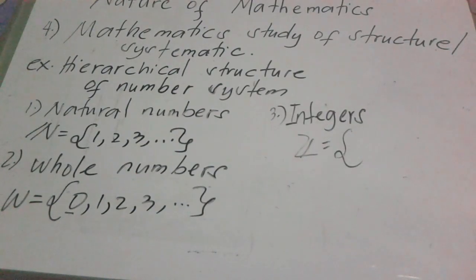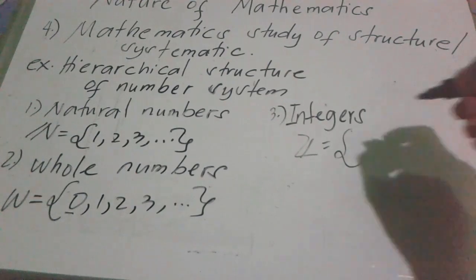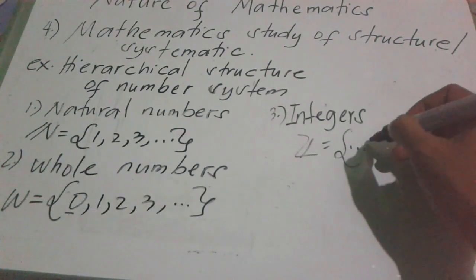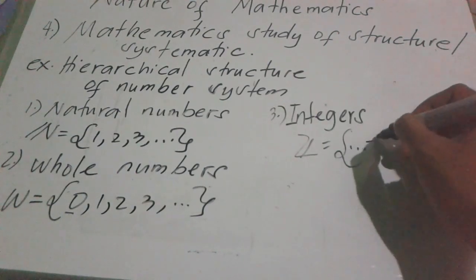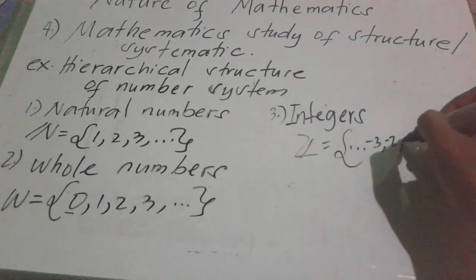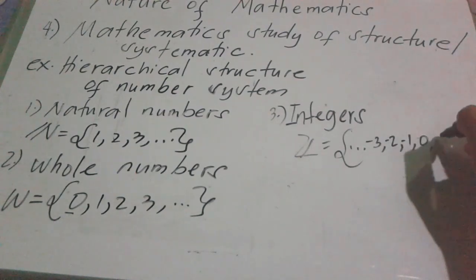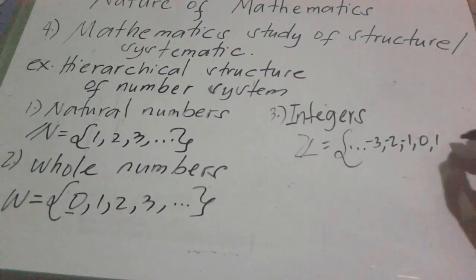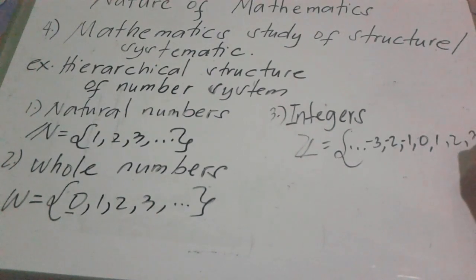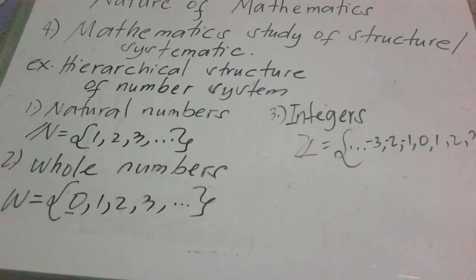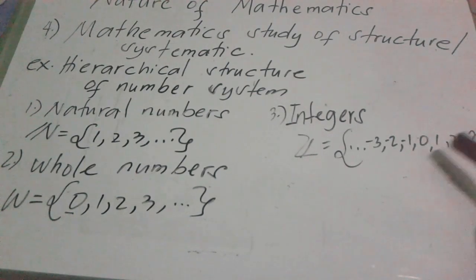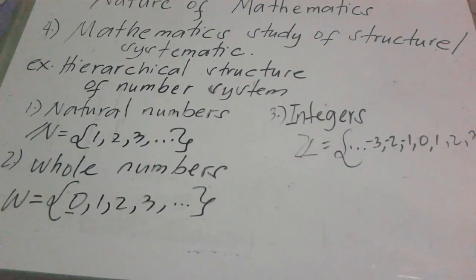Integers include: negative 3, negative 2, negative 1, 0, 1, 2, 3, and so on. So integers are natural numbers and their negatives — the natural numbers, then their negative counterparts.